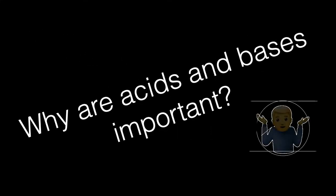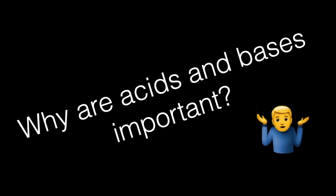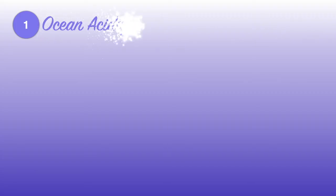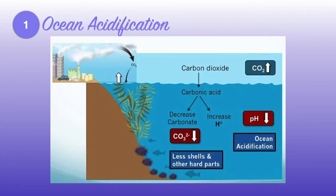At this point, you're probably wondering why are acids and bases important? One example is ocean acidification. Ocean acidification is the decrease in pH levels caused by an uptake of carbon dioxide. There are high levels of carbon dioxide that then dissolve in the ocean, forming carbonic acid.